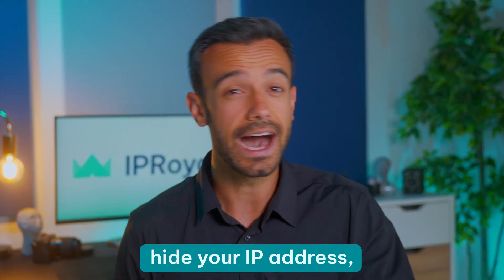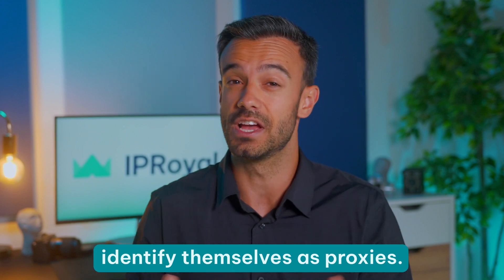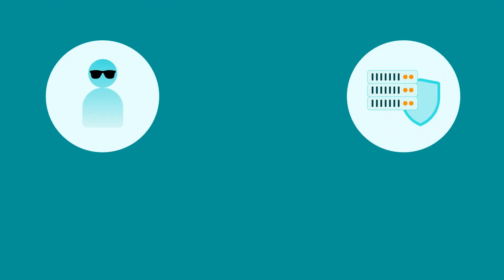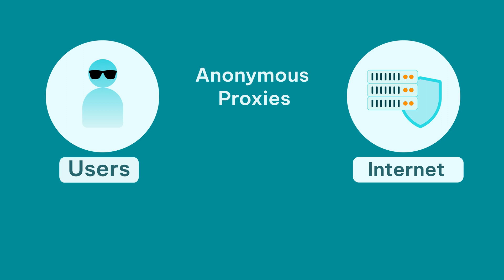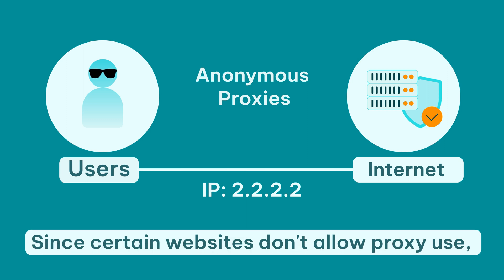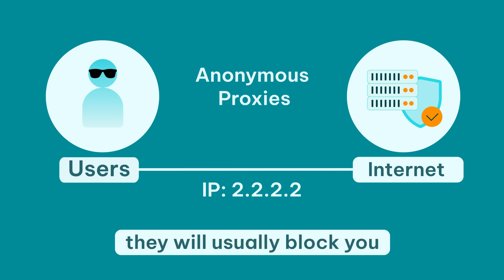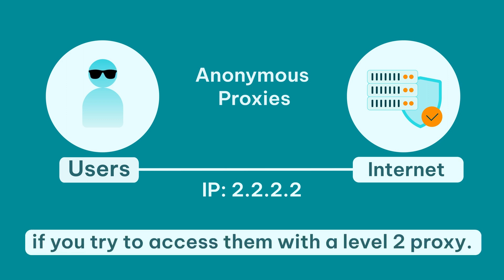Anonymous proxies, or level 2 proxies, hide your IP address but they also identify themselves as proxies. In other words, the server you're trying to reach will not see your IP address, but it will still know your request came from a proxy. Since certain websites don't allow proxy use, they will usually block you if you try to access them with a level 2 proxy.